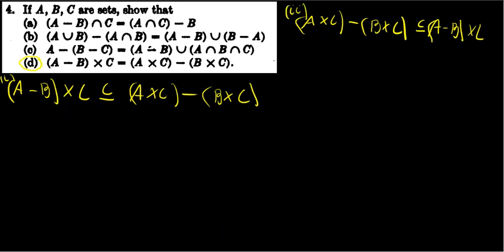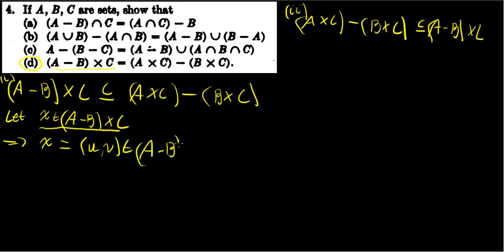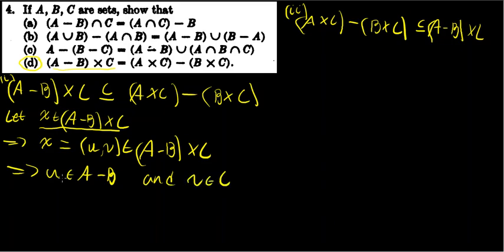We're going to take a general element in (A-B)×C. So let X be in (A-B)×C. Since X is in the cross product of two sets, X equals some ordered pair (U, V) where (U, V) is in (A-B)×C. That implies U is in A-B and V is in C, by the definition of a cross product.